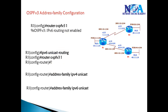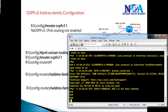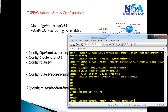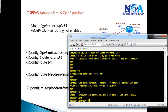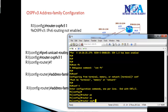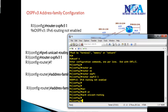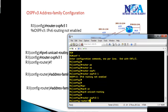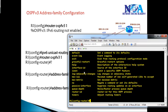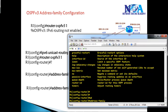Let me get into the command line. I have a router running IOS 15.x. I enter 'router ospfv3' and a process ID. I can see the message that IPv6 routing has to be enabled. After enabling IPv6 routing and entering the command, using question mark shows the different options you can configure for OSPF.